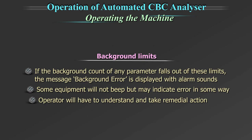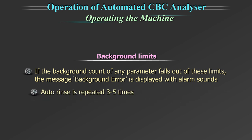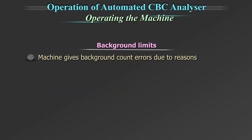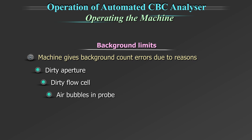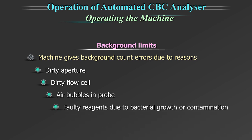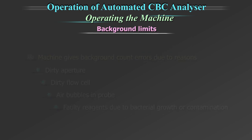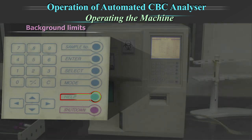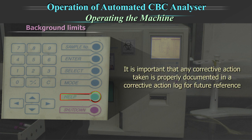If the background count of any parameter falls outside these limits, a 'background error' message is displayed with an alarm sound. Auto rinse should then be repeated 3–5 times. Machine may give background count errors due to dirty aperture, dirty flow cells, air bubbles in the probe, or faulty reagents due to bacterial growth or contamination. Please go through the help menu and take corrective action as displayed. It is important that any corrective action taken is properly documented in a corrective action log for future reference.